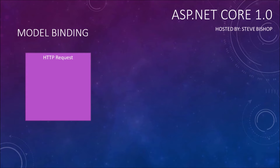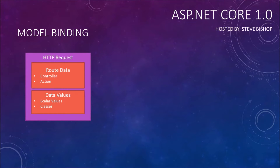We start off with an HTTP request, which has our route data. In the URL we specify the controller and the action — this is part of what's called the route data. Along with the HTTP request is also our data values, which can be a scalar value or you can actually pass an entire class.